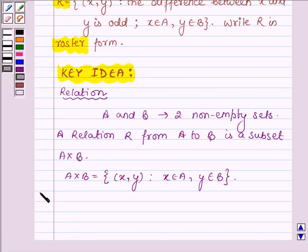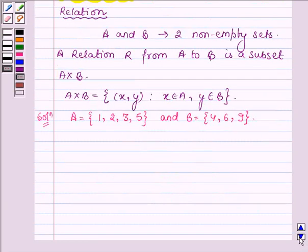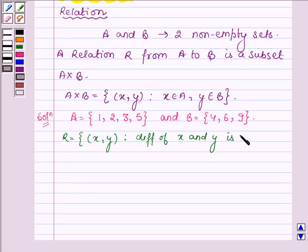Let us now start with the solution. Here we have set A having elements 1, 2, 3 and 5, and the set B has elements 4, 6 and 9. And the relation R is having all the ordered pairs (x, y) such that difference of x and y is odd, and x belongs to the set A and y belongs to the set B.